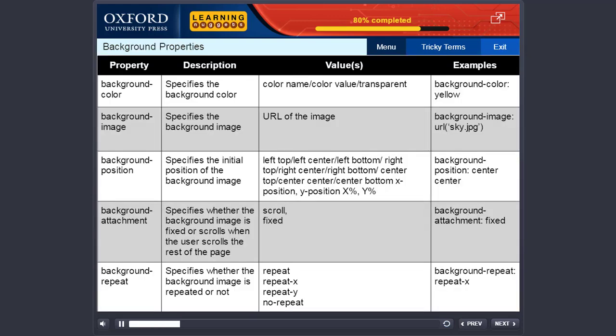Background properties are used to set the background style of an HTML element. The different background properties that can be defined in an HTML document are explained in the table below.